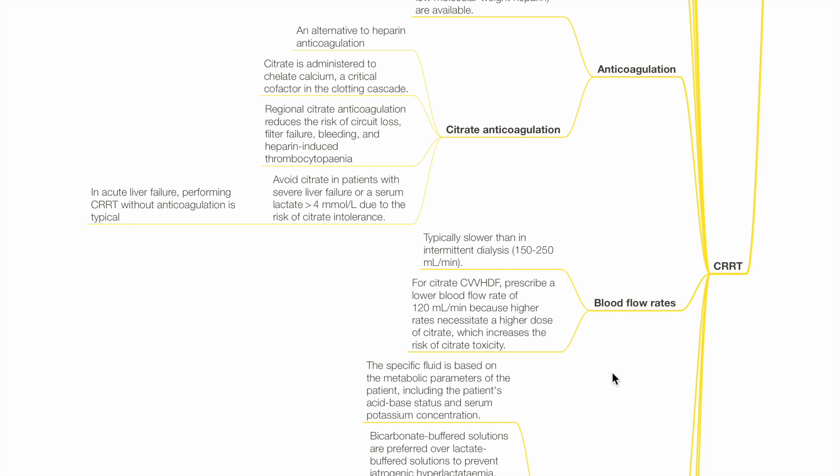Blood flow rates is 150 to 250 mLs per minute, which is typically slower than intermittent hemodialysis. For citrate CVVHDF, prescribe a lower blood flow rate of 120 mLs per minute, as higher rates necessitate higher dose of citrate, increasing the risk of citrate toxicity.